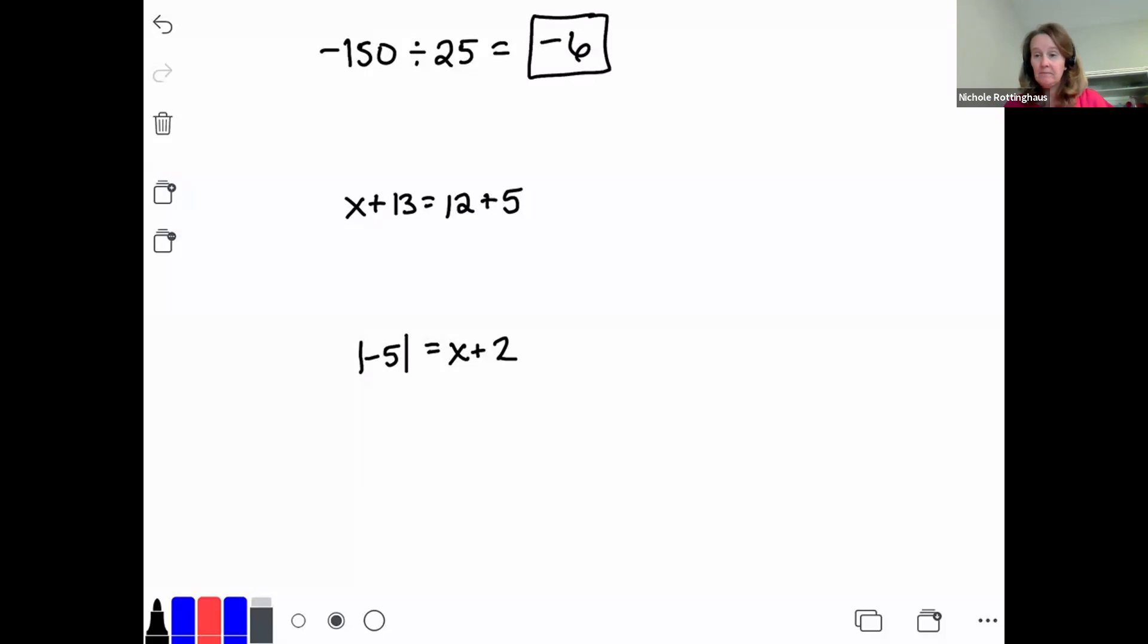Number two, a one-step equation, but I've got to do some simplifying. So x plus 13 equals 12 plus 5 is 17. Let's simplify that first, and then we'll solve our equation by subtracting 13 on both sides. x equals 4. It's really important that you simplify before you try to solve the equation because you only want to subtract 13 one time on both sides.